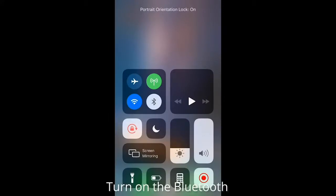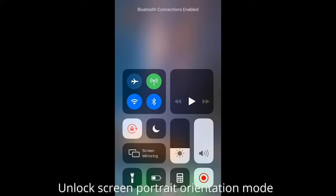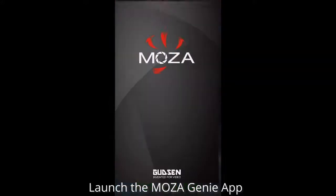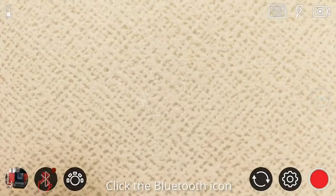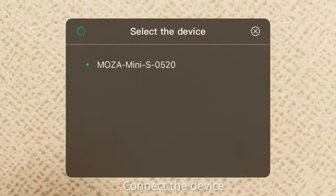Turn on the Bluetooth. Unlock the screen portrait orientation. Launch the Moza Genie app. Click the Bluetooth icon. Connect the device.